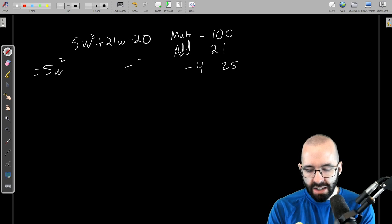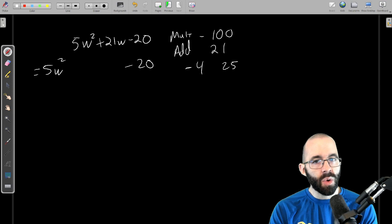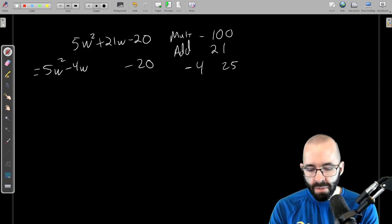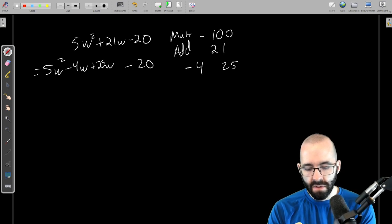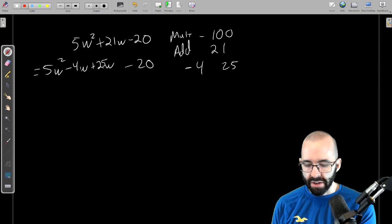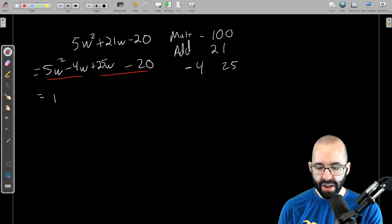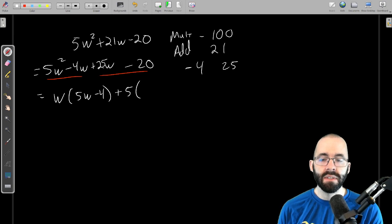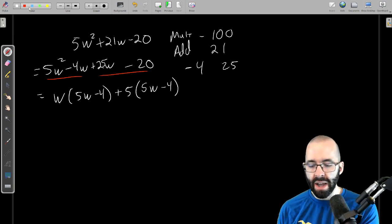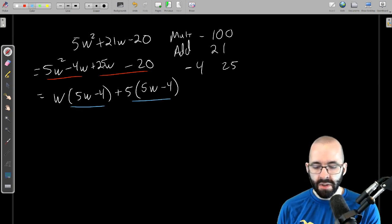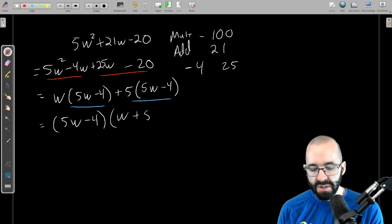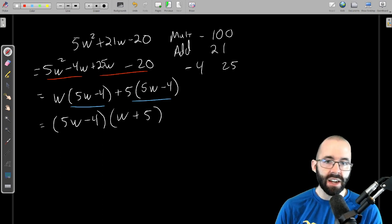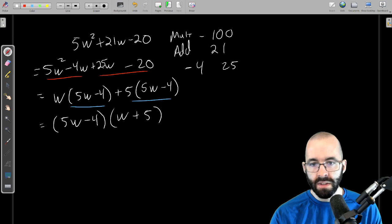We leave the first one alone, leave the last one alone, and split that middle term up. It's 21w. 21w is minus 4w plus 25w, doesn't matter which order you write them in. Now we factor by grouping. The first group we can only factor out a w, and we're left with 5w minus 4. The second group we can factor out a 5, what's left is 5w minus 4. Great, they should always match. Next notice that both terms have a 5w minus 4, we factor out a 5w minus 4 from both terms. The first term is only left with a w, the second term is only left with a 5. This is fully factored, we can't factor anymore.